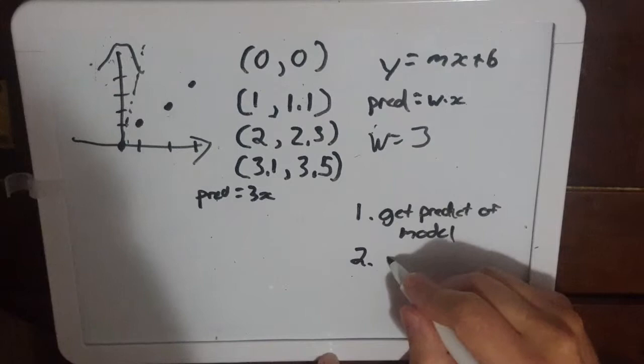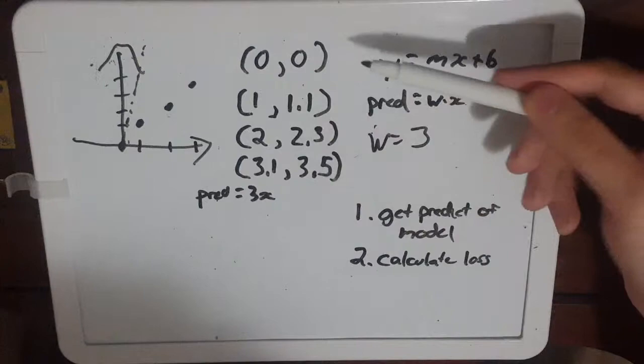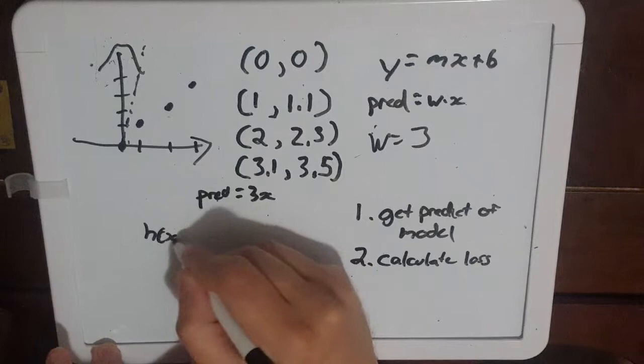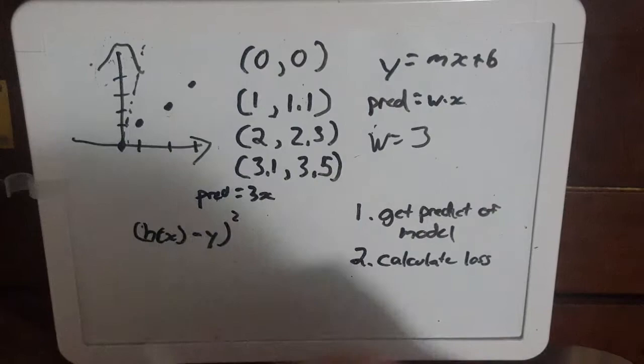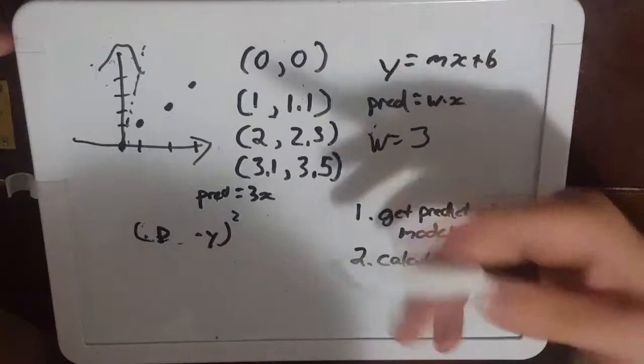Step two in our training algorithm: calculate our loss. Now how are we going to get our loss? Well we have our predictions, we know the right answer with our label data and what we're going to do is something called mean squared error. So that is prediction minus y squared.